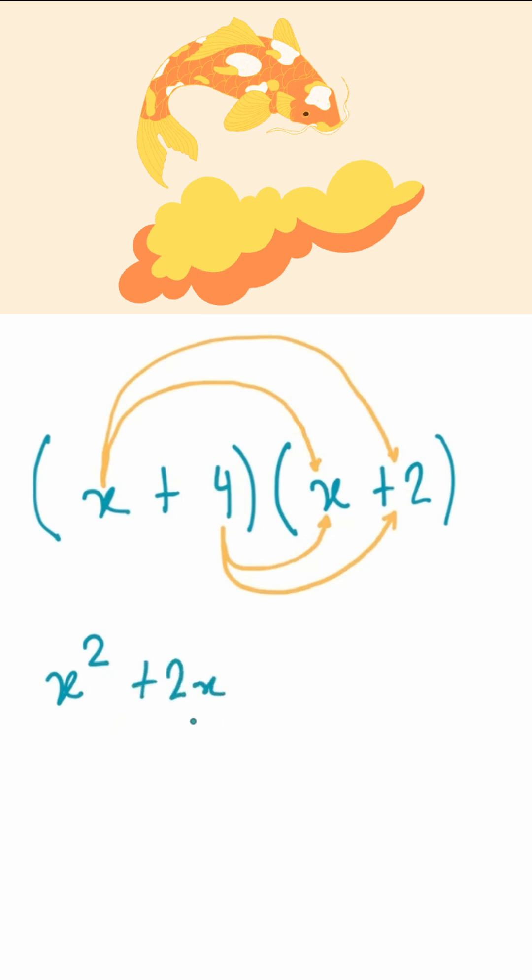That's the first half done. The second half deals with this 4, multiplying with the two terms. So 4 times x gives us plus 4x. And then 4 times plus 2 gives us plus 8. And that is your expansion done.